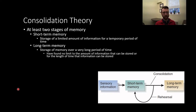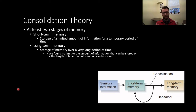Short-term memory is storage of a limited amount of information for a temporary period of time. Long-term memory is storage of memory over a very long period of time — the stable long-term memory we think of when we think about memory, things you can remember from a long time ago. There's not really been a discovery of a limit on how much information can be stored in long-term memory; it's theorized to be essentially limitless.